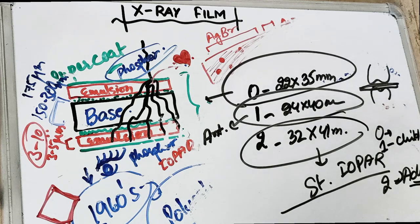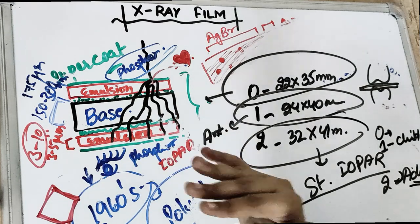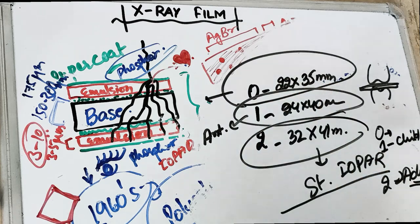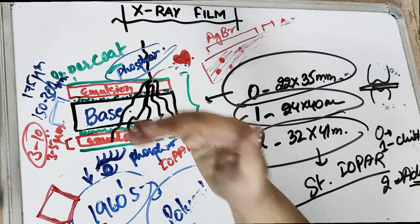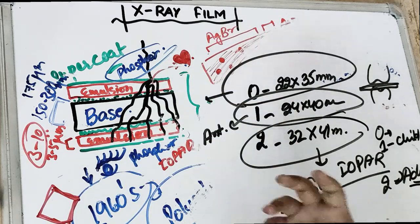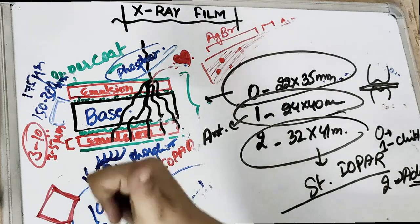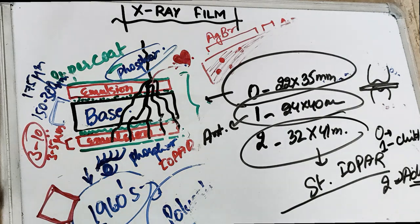So this is about the x-ray film. In between there is a base made up of polyester. In the double coated film, we have emulsion on either side made up of silver halide in a gelatin matrix, and the upper layer is a super coat to protect from mechanical damage. If you enjoyed the video, give it a thumbs up and comment below. There is a link in the description to support the Patreon. Till then, keep reading, keep learning, stay motivated — I will see you soon in the next video.